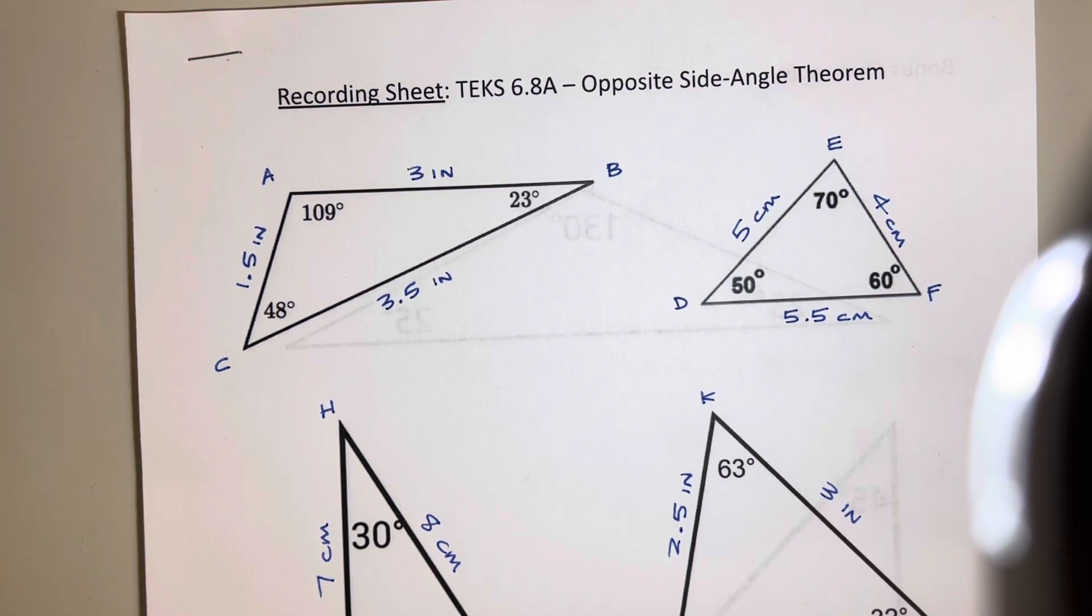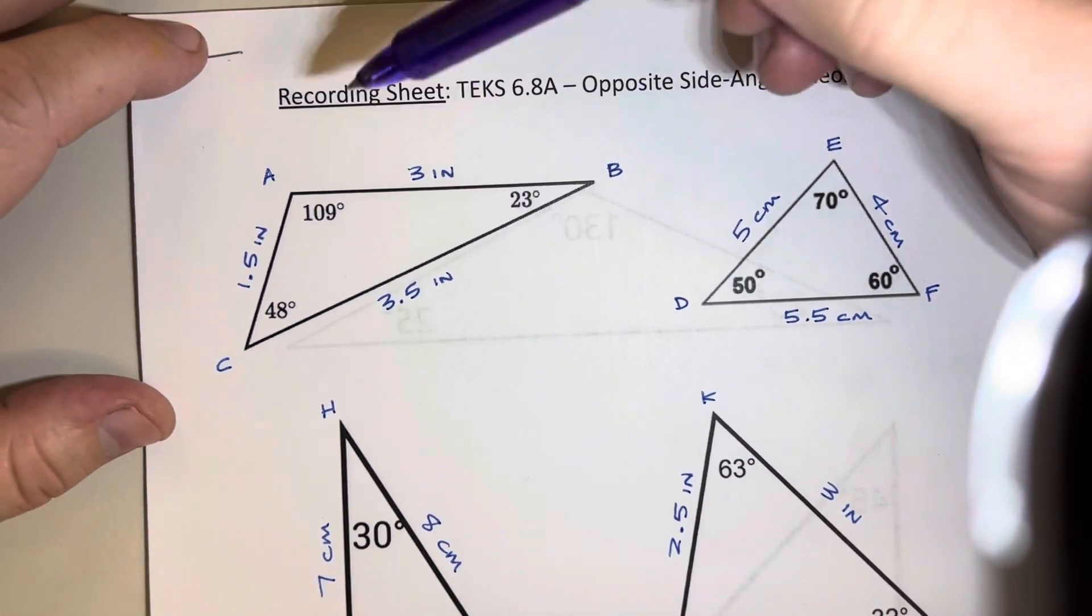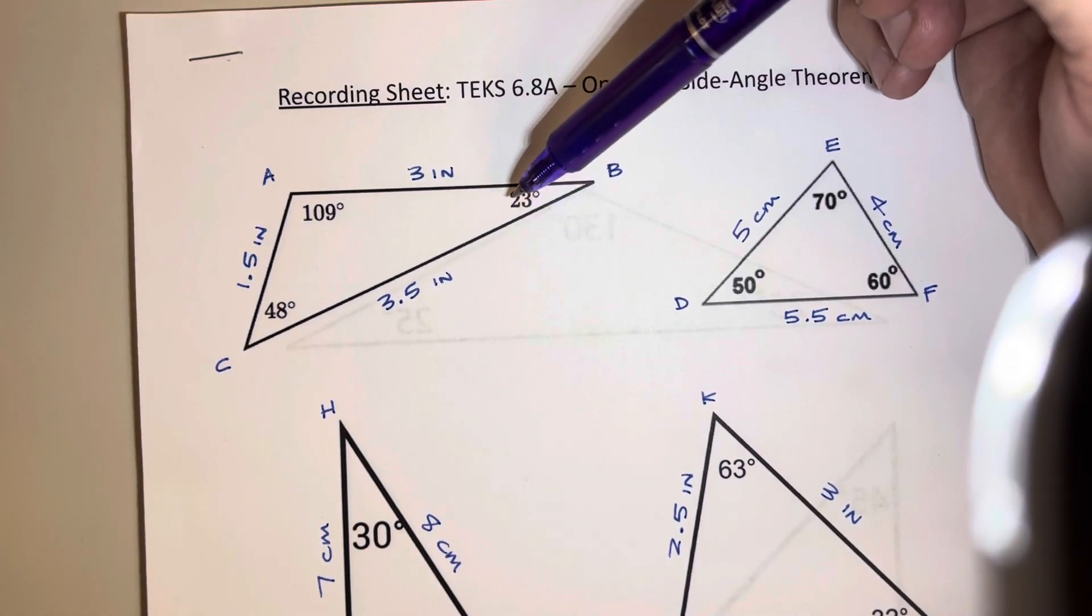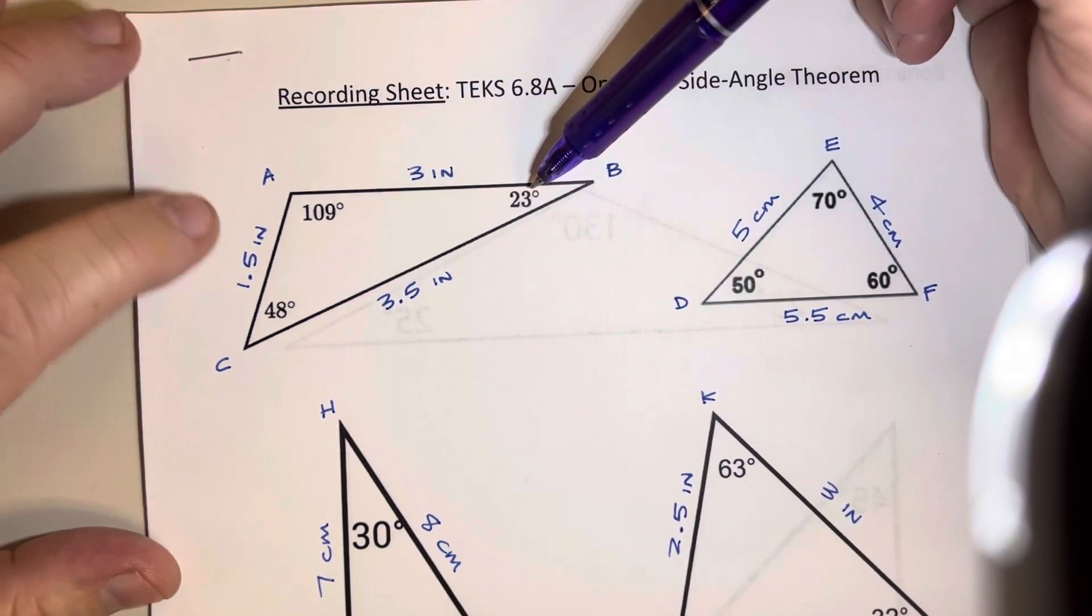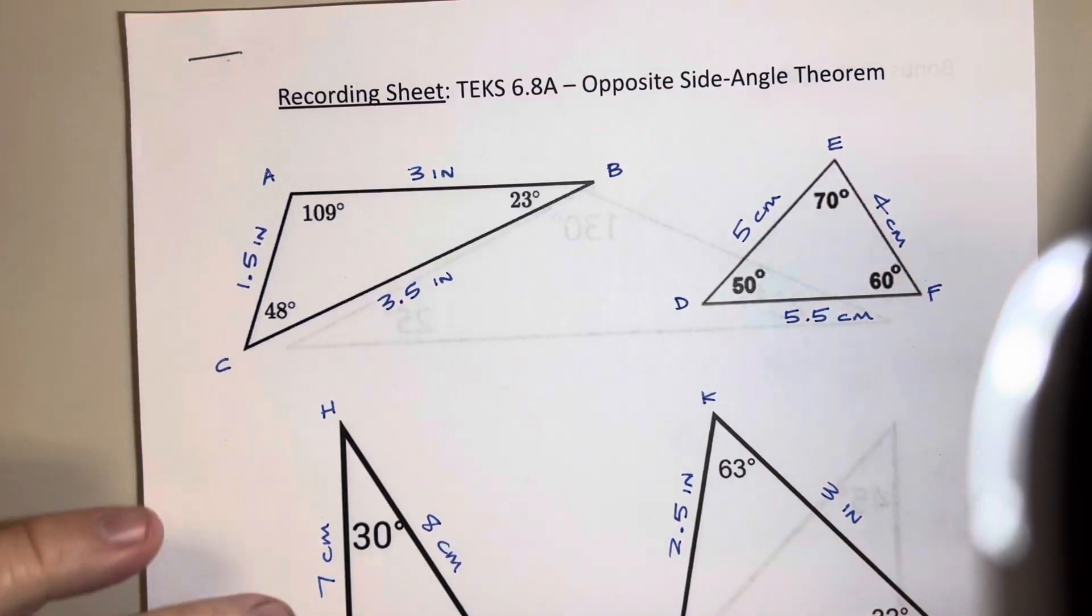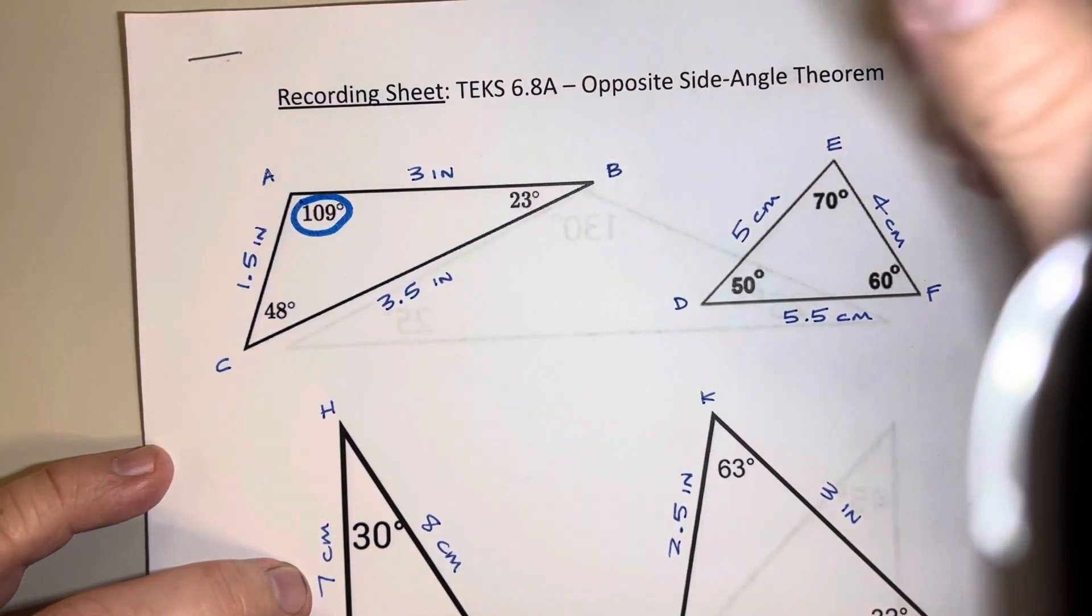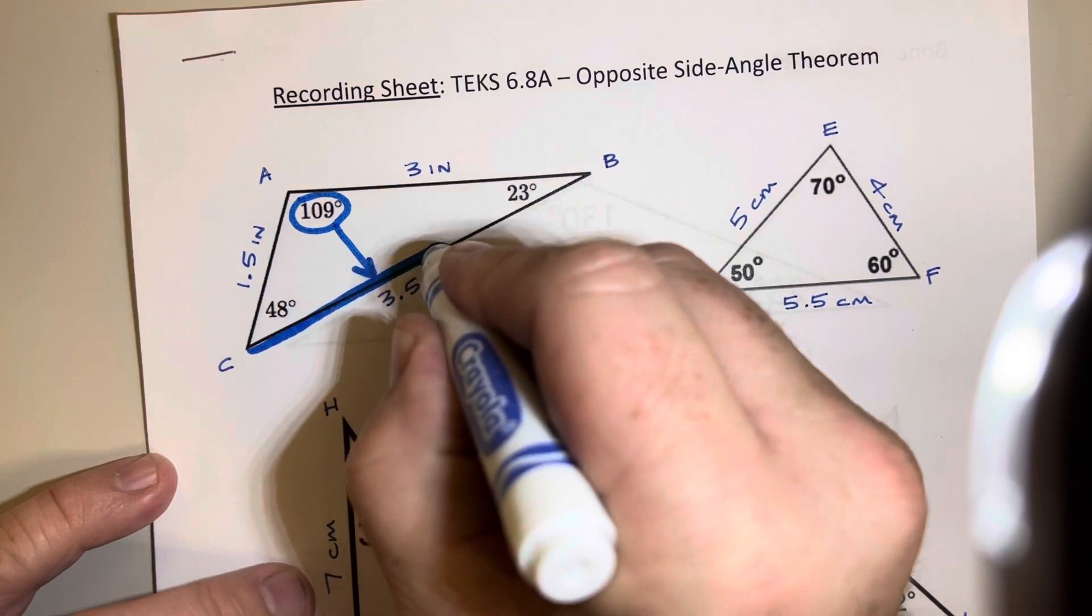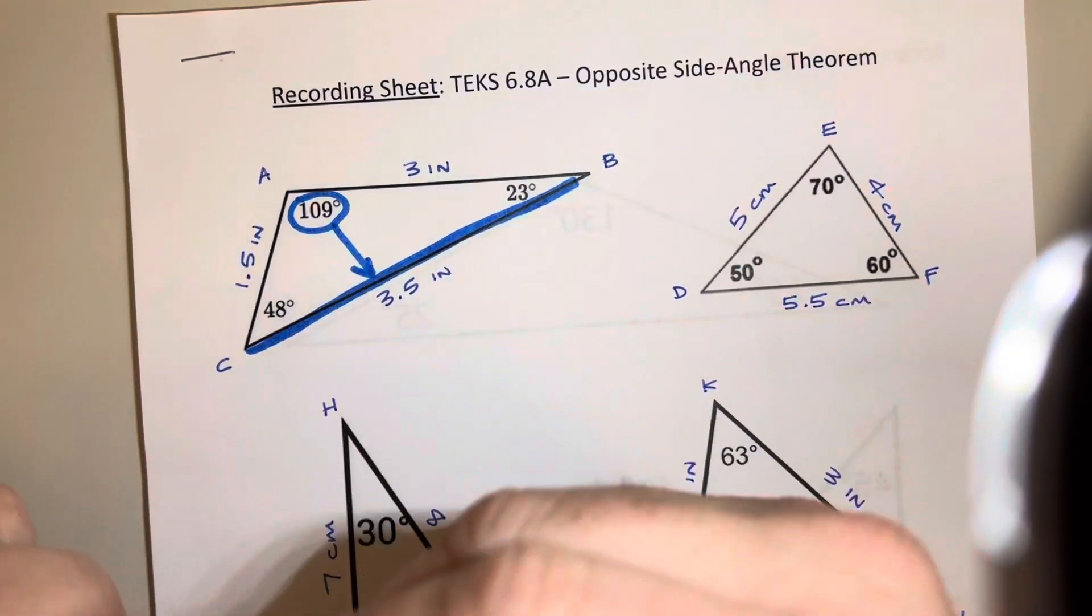You could use any color that you wanted to for this but basically what we learned is that if you can look at these three angle measures and you can see that this one is obviously the largest. 109 degrees is obviously way more than 23 and 48. What we found is we found that the largest angle, this 109 degree angle, is always opposite from the longest side.